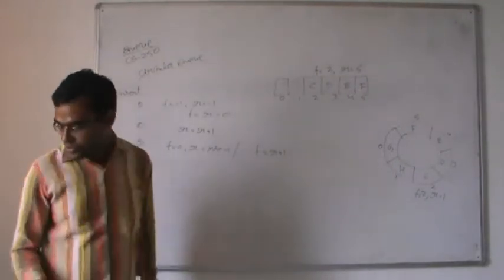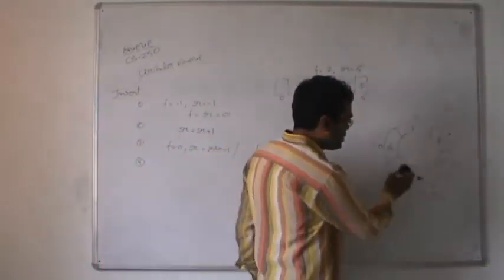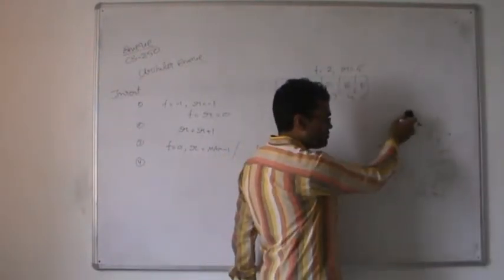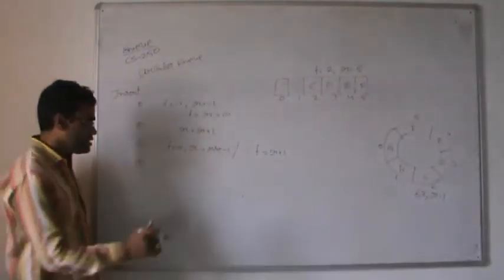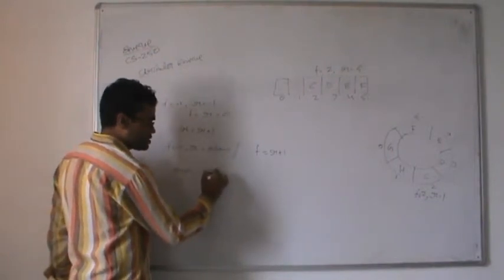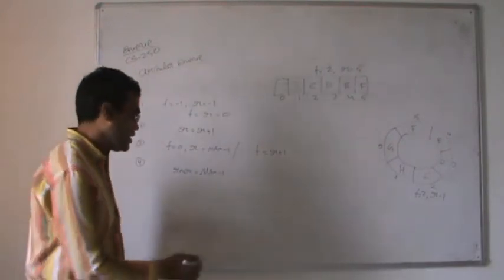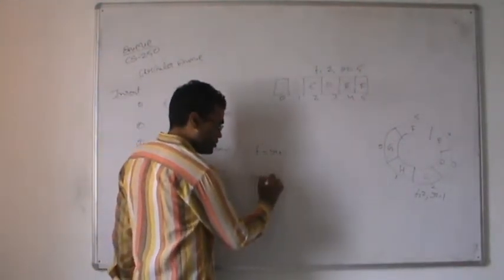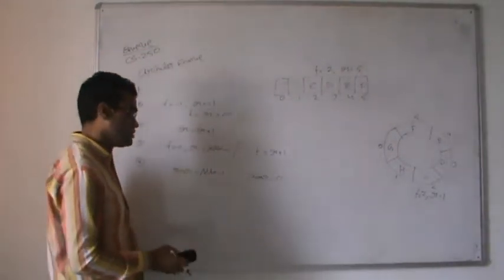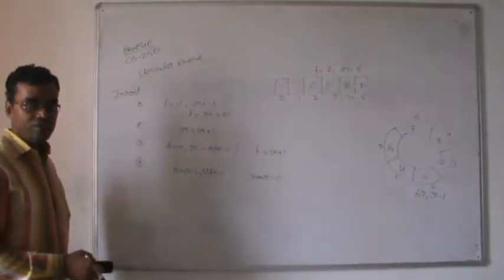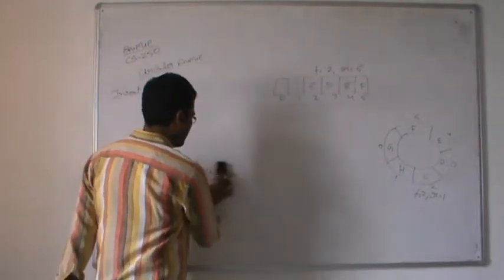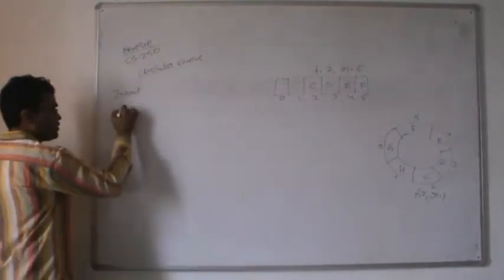For the insert operation in circular queue, first we test for the full queue condition. If front equals zero and rear equals MAX minus one, or if front equals rear plus one, these are two conditions for a full queue. Every time we have to test for the full queue before insertion. If the queue is full, write overflow and exit.